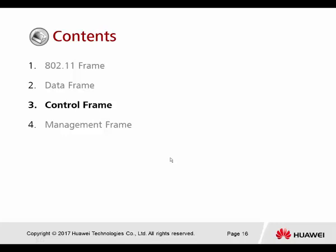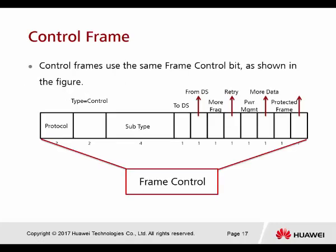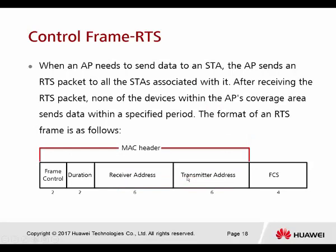Number three is the control frame. The control frame has the same frame format as the data frame — it also has frame control. However, the control frame does not carry any data information. The control frame is used to prevent collisions. RTS stands for Request to Send.